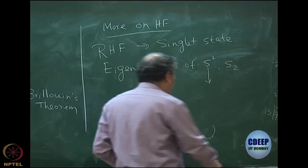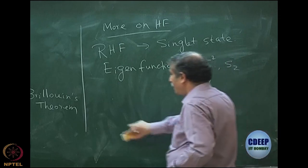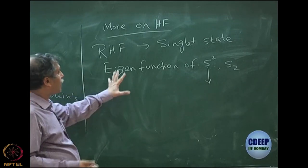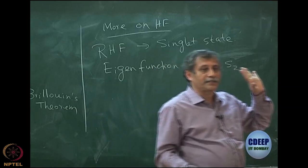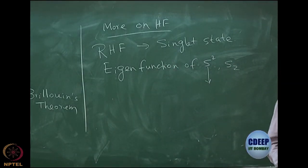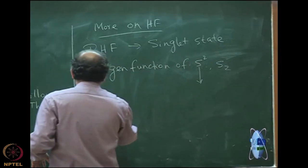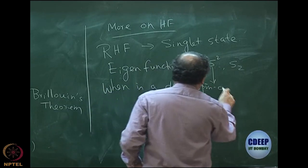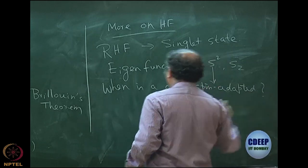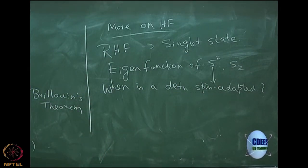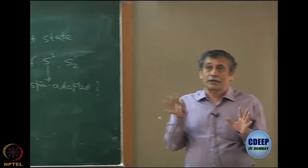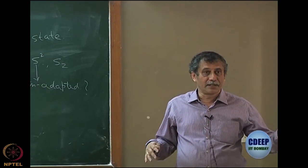There is an important theorem for a determinant. When is a determinant spin-adapted? A spin-adapted determinant or state is an eigenfunction of S-squared and Sz operator. The question is: when is a determinant spin-adapted, i.e., an eigenfunction of S-squared and Sz? The proof is very elaborate, but the result is very important.